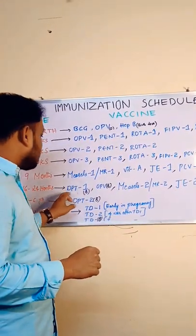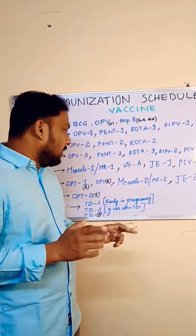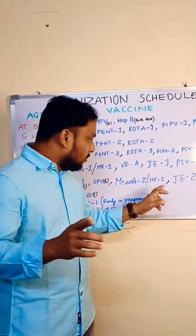16 to 24 months: DPT first booster, OPV booster, measles or MR second dose.